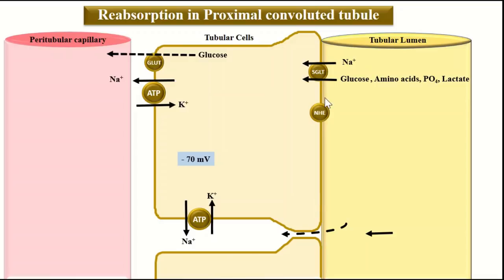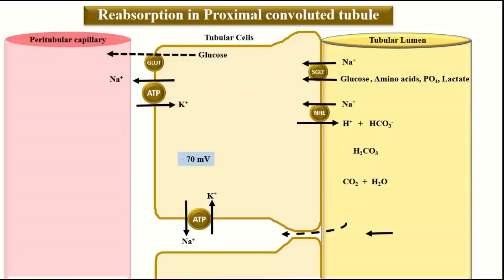Another important transporter on the apical side of the tubular cell is the sodium-hydrogen exchanger (NHE). This exchanger is important for counter-transport: sodium is reabsorbed into the cell and in exchange, hydrogen ions are secreted into the tubular lumen. This sodium-hydrogen counter-transport is again driven by the energy created by the primary active sodium-potassium ATPase pump.